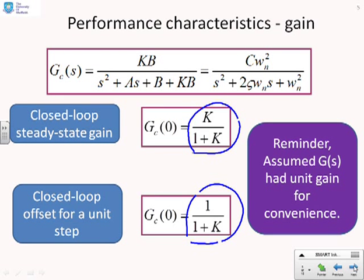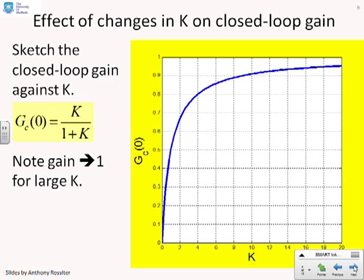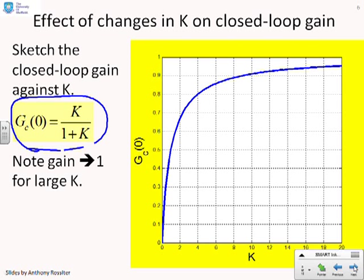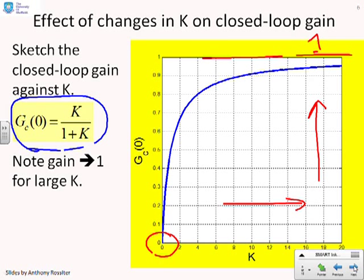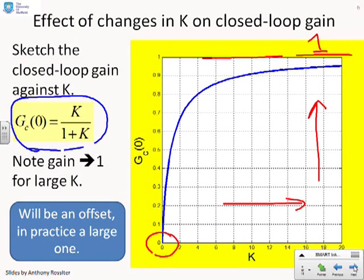Here's the same plot seen for first-order systems: we've plotted the closed-loop steady-state gain G_c(0) as a function of k. For small k, the closed-loop gain is small; as k increases, the closed-loop gain increases. But we never really get to 1 unless k goes to infinity, so there's always going to be some form of offset if you have just proportional compensation. In practice, you'll have an offset and probably quite a large one.